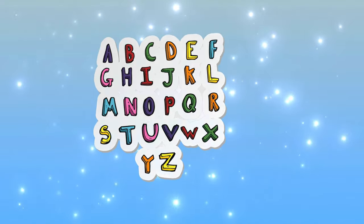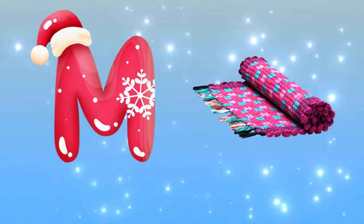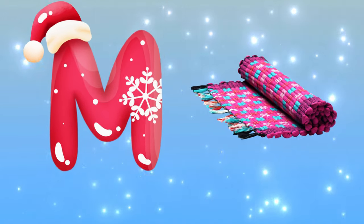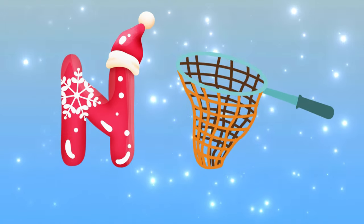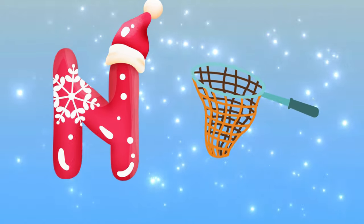M is for mat, m-m-mat. N is for net, n-n-net.